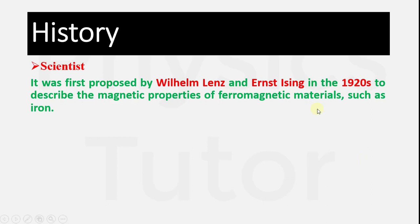Before studying the Ising Model, we will look at its history. The scientist who presented this model was named Ising, and in 1920 he presented his theory to describe the magnetic properties of ferromagnetic materials such as iron. Ferromagnetic materials are very strong magnets and produce a magnetic field with a higher value than dia- and paramagnetic substances.